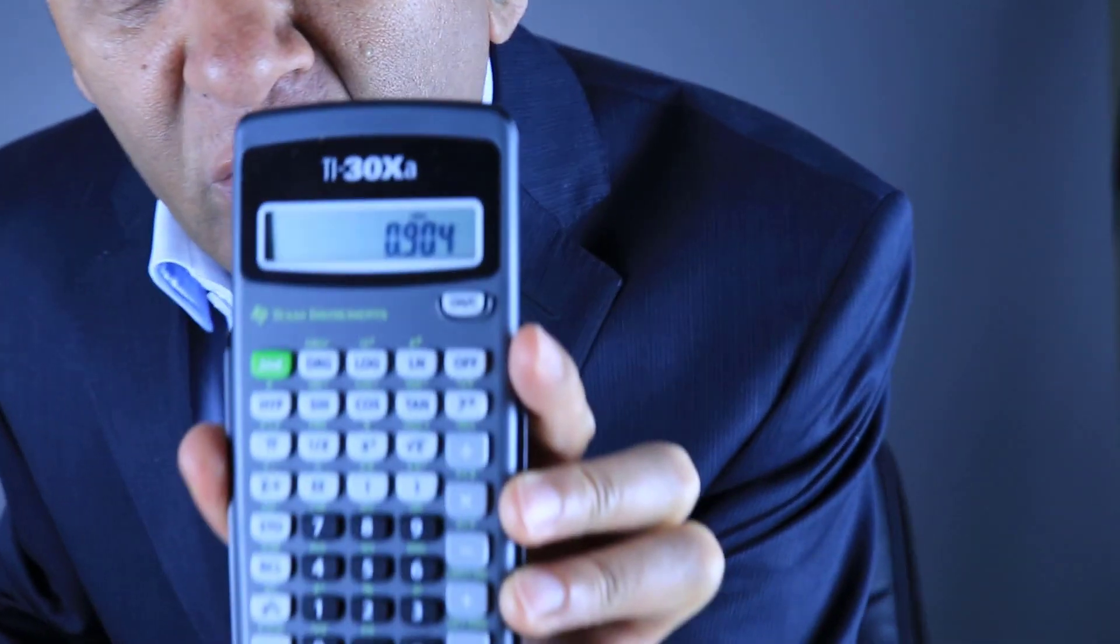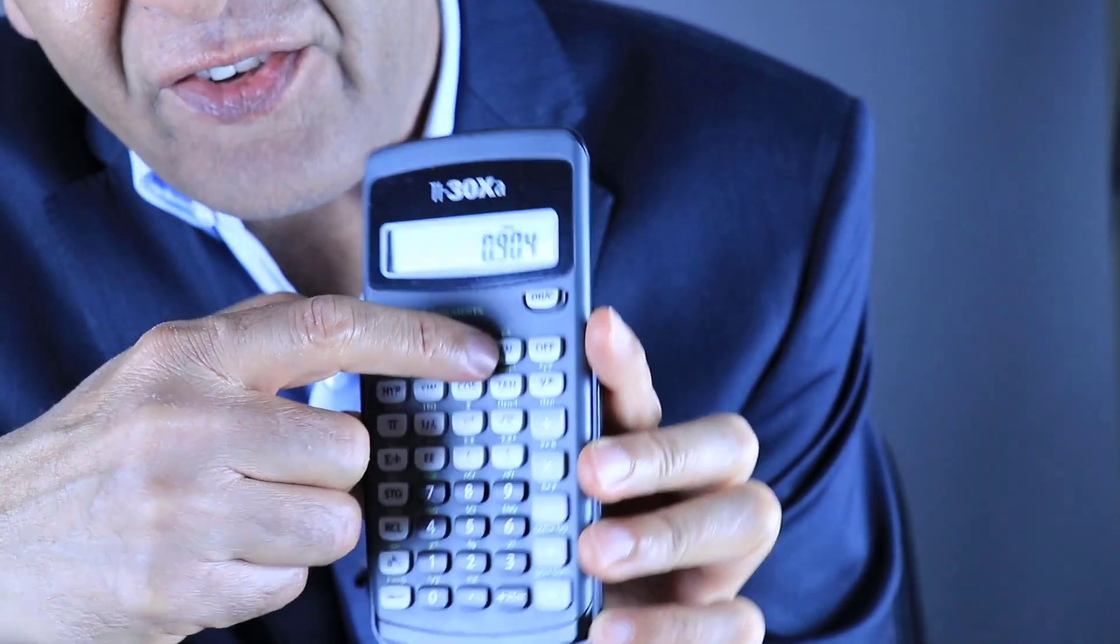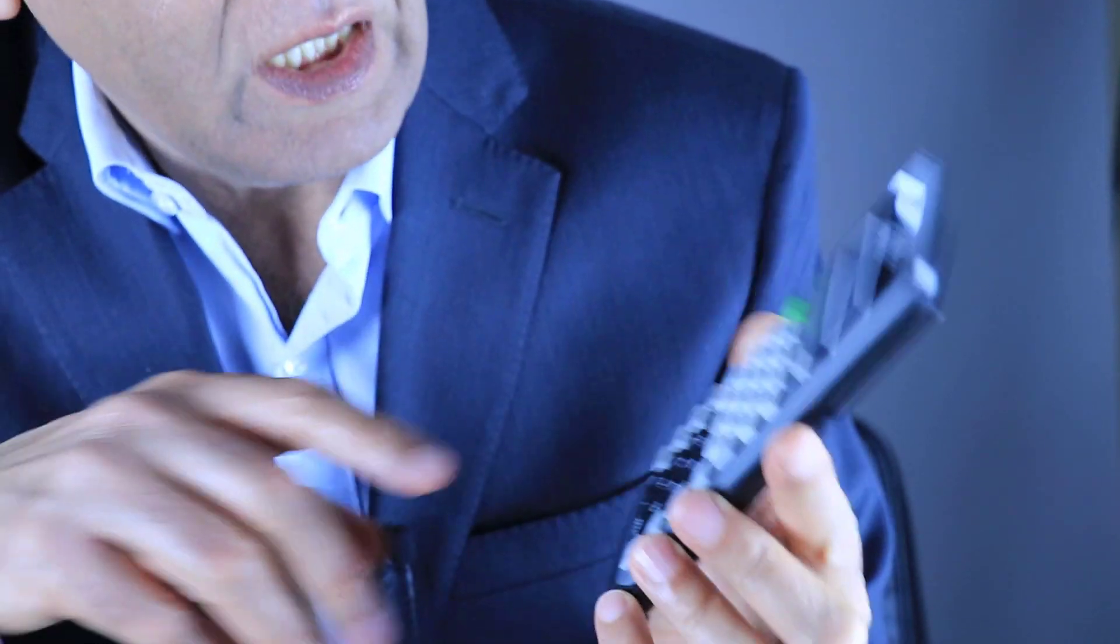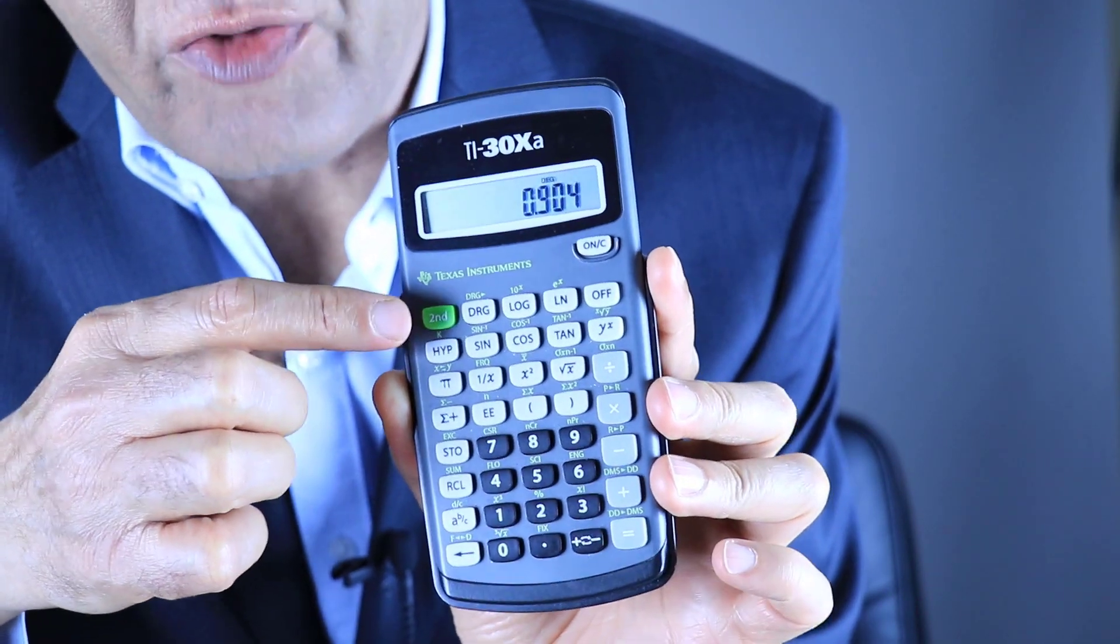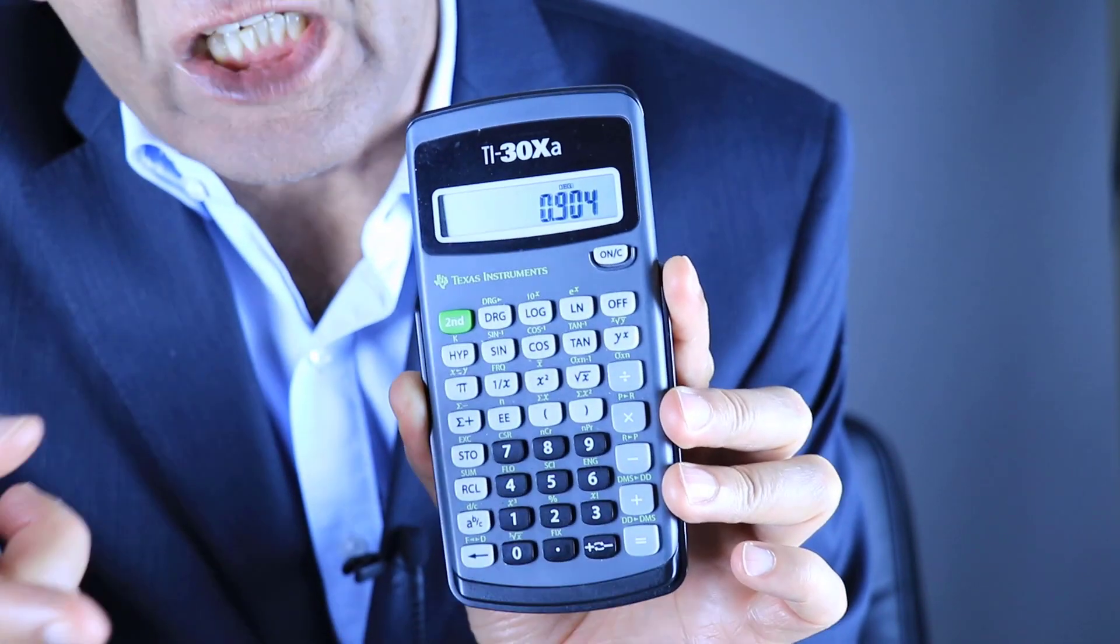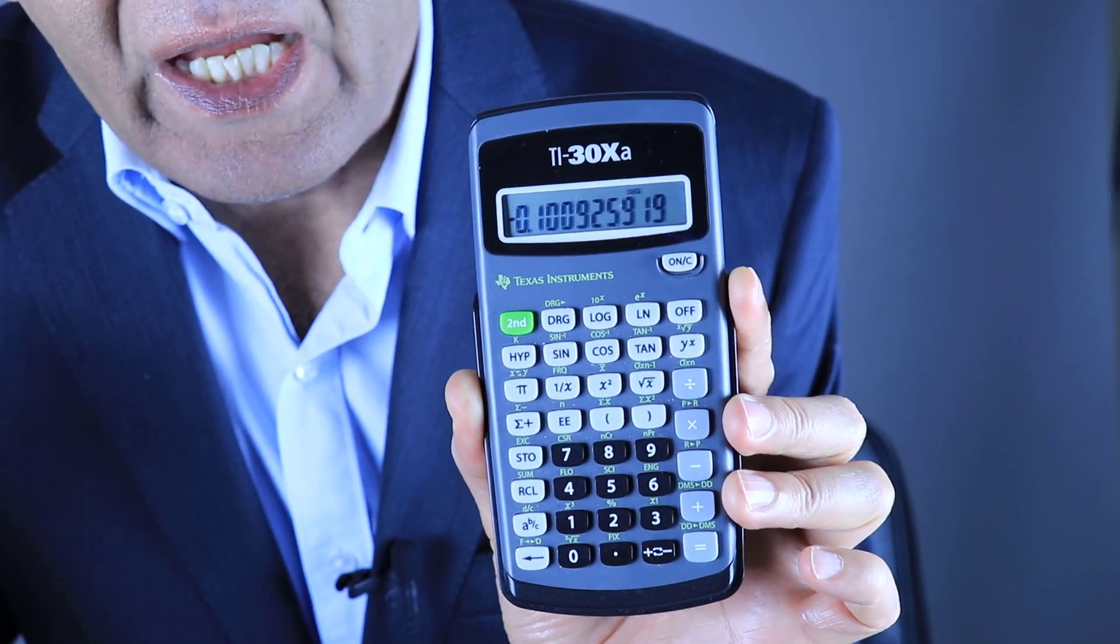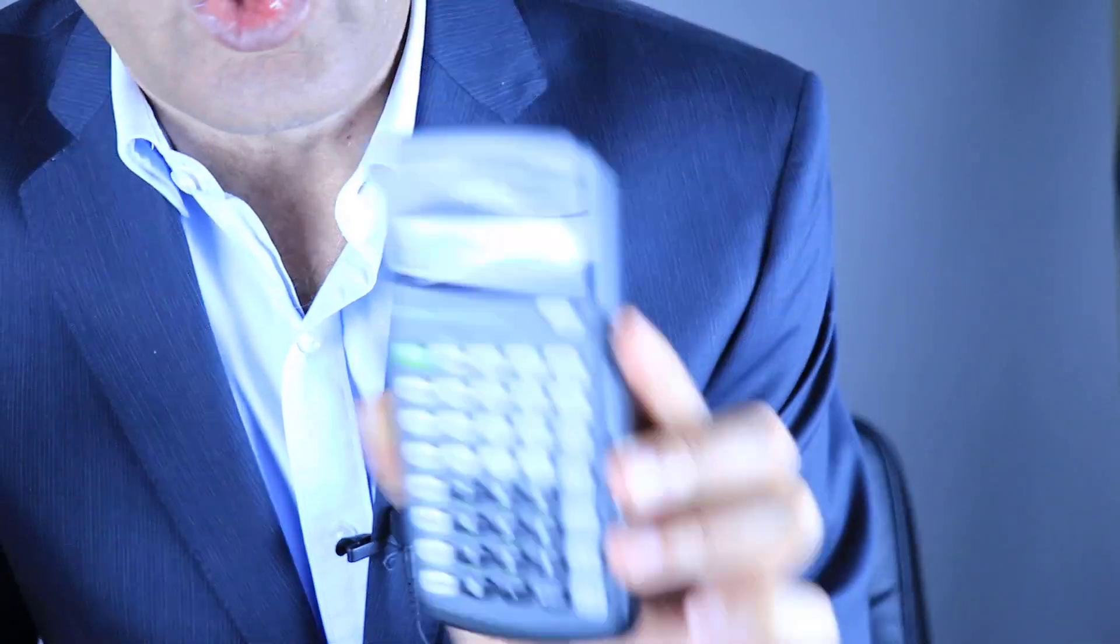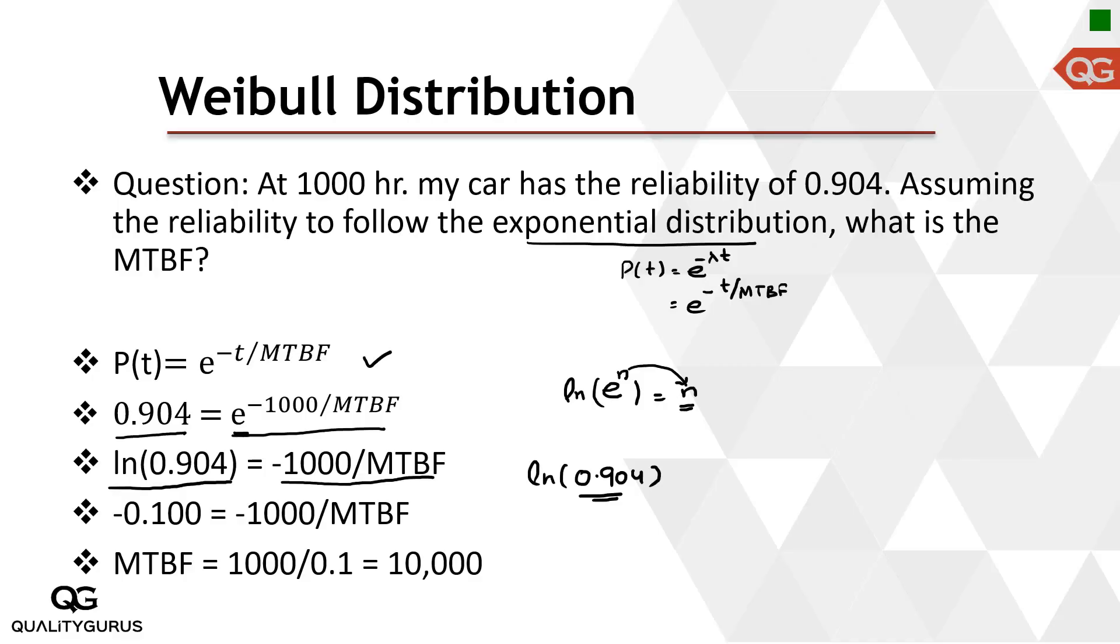Here I have 0.904 and you will see that this button which was e to the power x is actually the log button, ln button. If I press this ln, which is the third button without pressing the green one, this gives me the log value. And what is this? This is minus 0.1009.